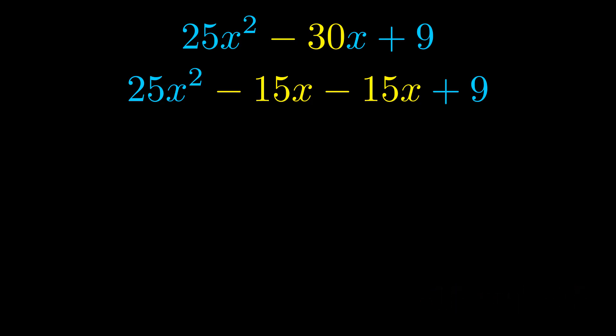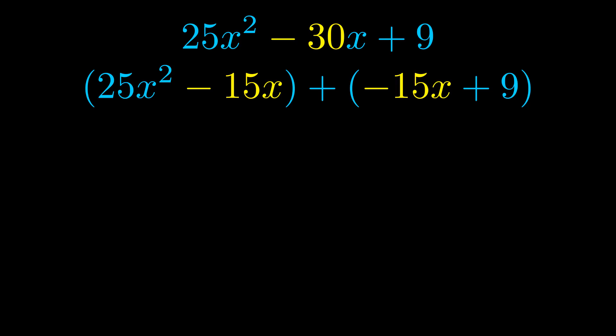Once we've done this we go ahead and we put parentheses around the first term and the last term and we do that so that we can take the greatest common factor out of both terms. We can see the greatest common factor is now outside in green. Notice also how what remains inside of the parentheses is the same in both cases.